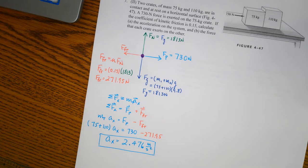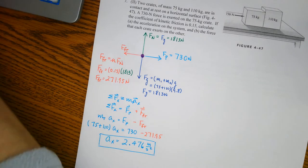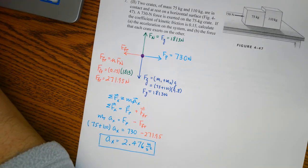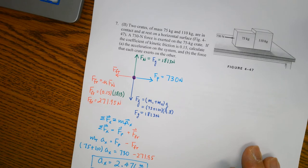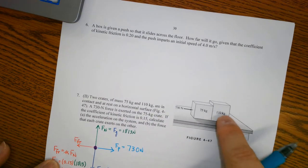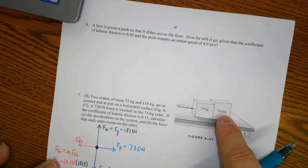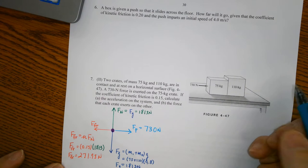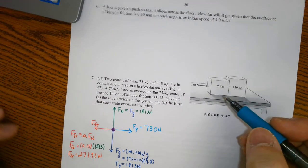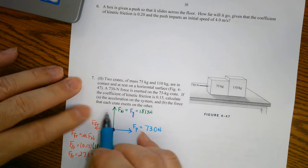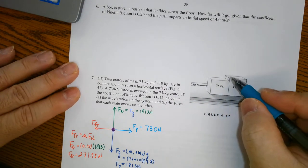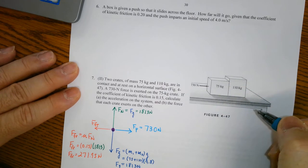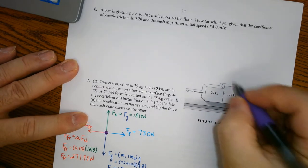When we calculated the acceleration, we got something like 2.476 meters per second squared. We already did this part. Now we're going to do the other part — calculating how much force is pushing this 110 kilogram box. So we need to calculate the force that each crate exerts on each other.